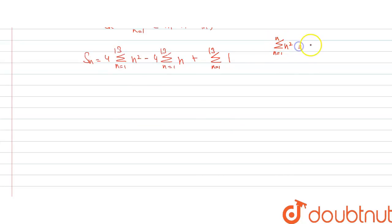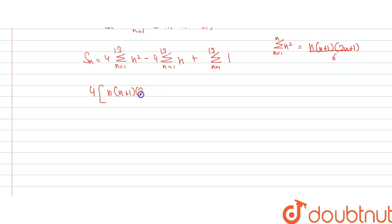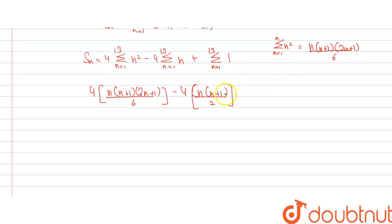We know that the summation of n² from 1 to n is given by n(n+1)(2n+1)/6, and the summation of n from 1 to n is n(n+1)/2. Using these formulas and substituting n = 13, we can now compute each part of the expression.